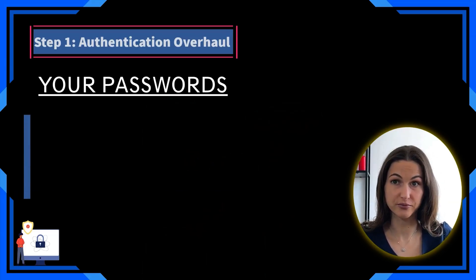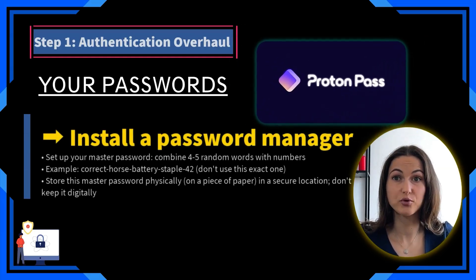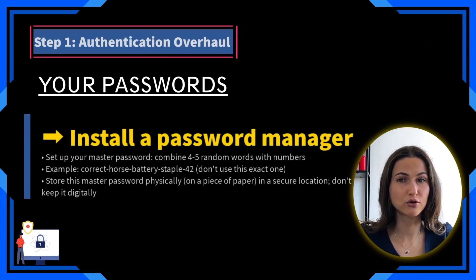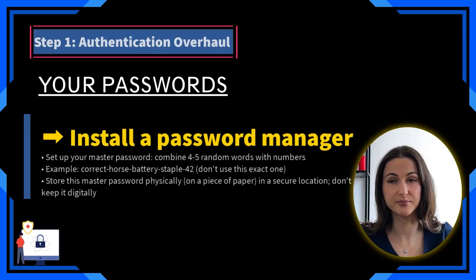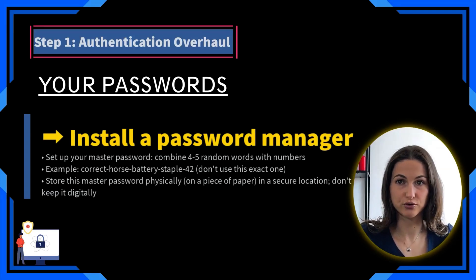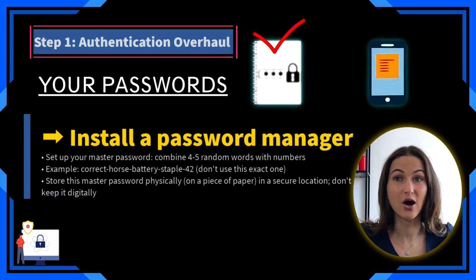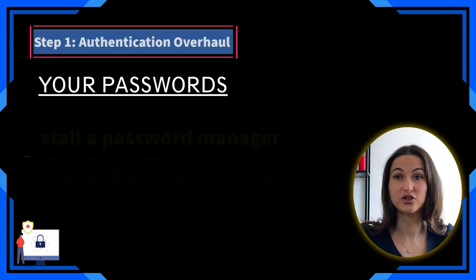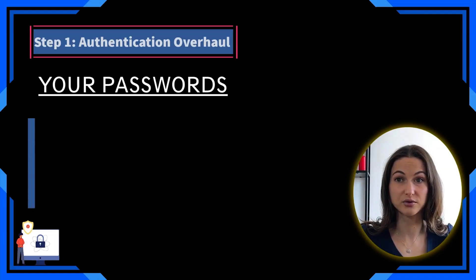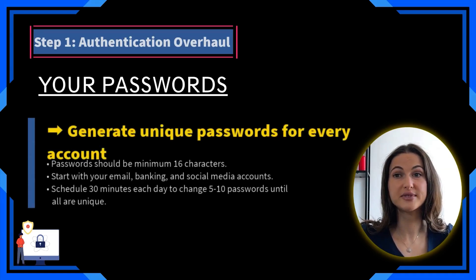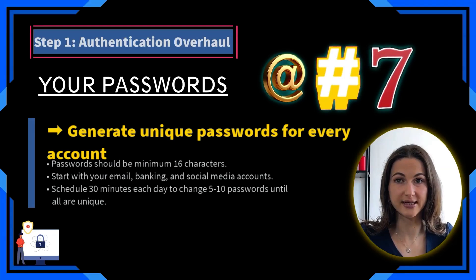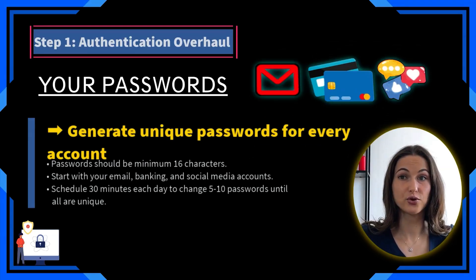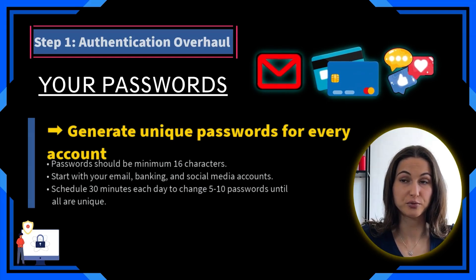Install a password manager — I personally recommend Proton Pass. Set up your master password by combining four to five random words with numbers, for example 'correct horse battery apple 42' — don't use this exact one. Store this master password physically on a piece of paper in a secure location; don't keep it digitally. Generate unique passwords for every account — minimum 16 characters including symbols, numbers, and mixed case — but just use the password manager's generator tool. Start with your email, banking, and social media accounts.